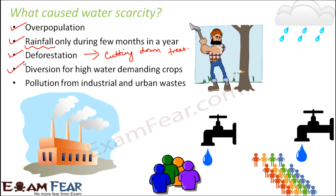Pollution from industrial and urban wastes is another cause. A lot of industrial and urban waste contains harmful substances that pollute water bodies. It has been observed that industrial and factory wastes are directly disposed into nearby water bodies such as ponds or rivers. All the waste is dumped into them, the entire water body gets polluted, and that water is no more useful to us.